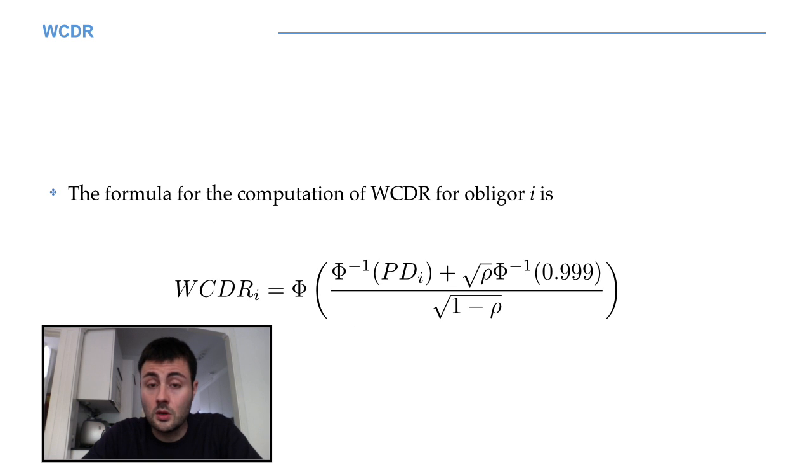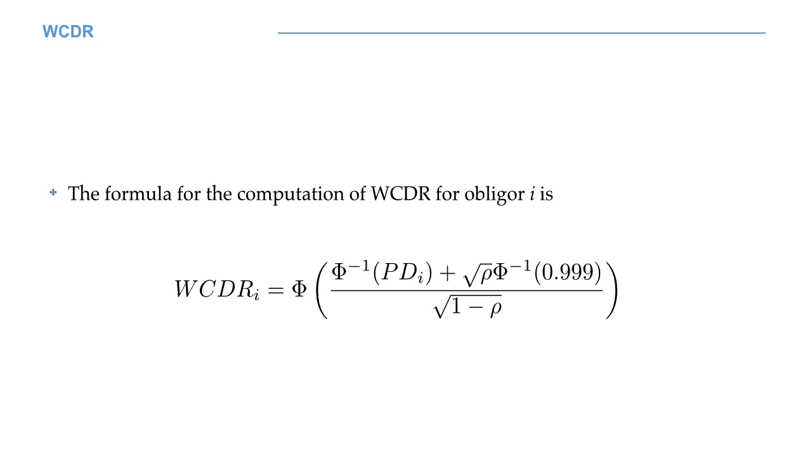The computation of worst case default rates is performed using the formula you see on your screen. I do agree with you if you think that this formula has somehow fallen from the sky. That's true. The point is that in order to derive this formula completely and formally, we would need a big probabilistic apparatus that we do not have, such as the copula model. Just take this formula for granted.